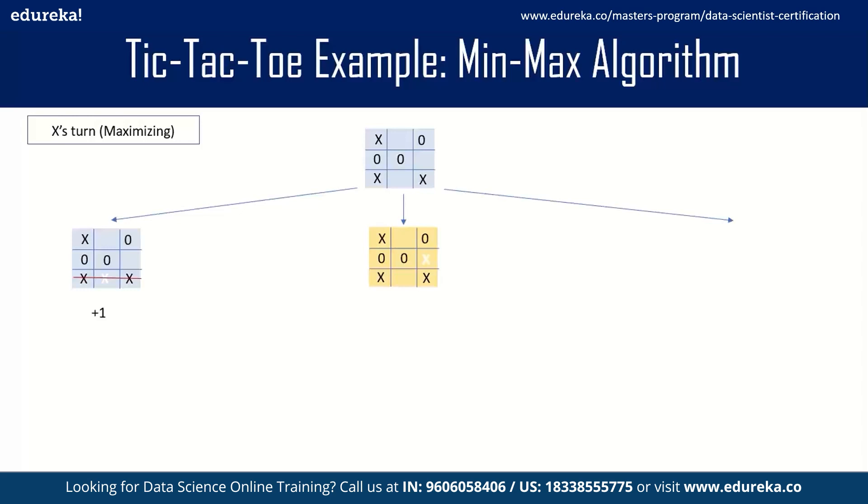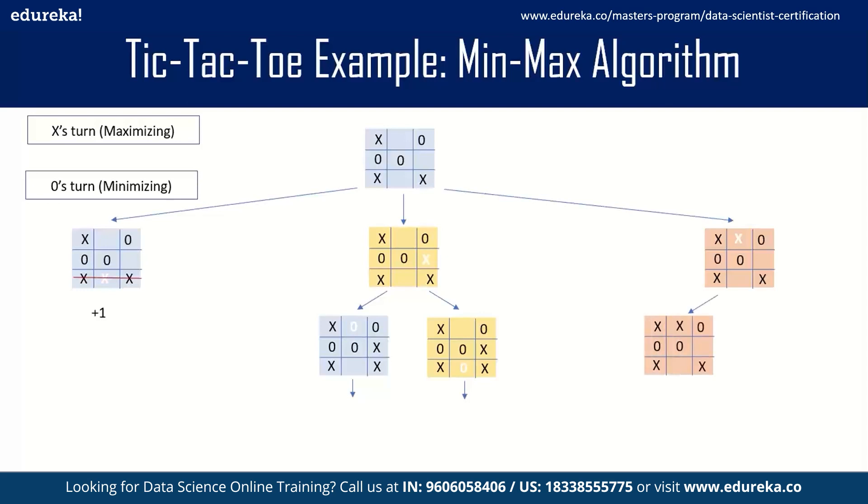Now player O gets the chance and O will try to minimize the score. There are two ways O can fill this space. Similarly in the third scenario, X moves here, the game is still not over, and O has two options to move. Now if O moves here then the game is not over and next turn will be X's. Let's take another position - suppose O moves here, then again the game is not over and X will get a chance.